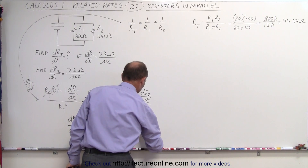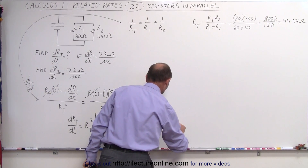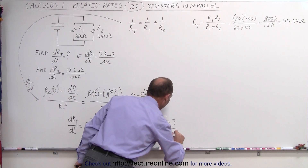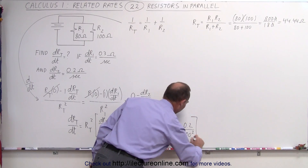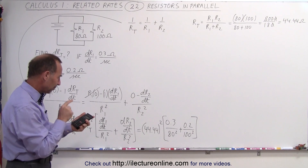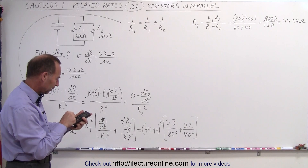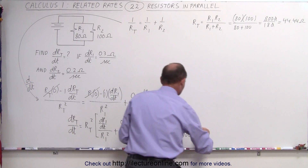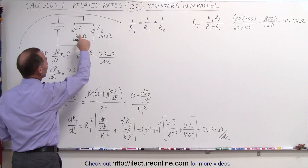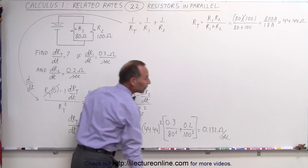We square 44.44 and multiply by the quantity: 0.3 divided by 80 squared, plus 0.2 divided by 100 squared. So we have 44.44 squared times (0.3 over 6400 plus 0.2 over 10000), which equals 0.132 ohms per second. So if R1 changes at 0.3 ohms per second and R2 at 0.2 ohms per second, the total resistance changes at 0.132 ohms per second.